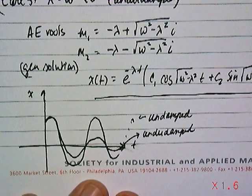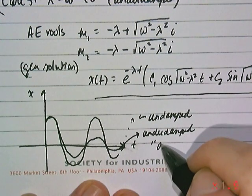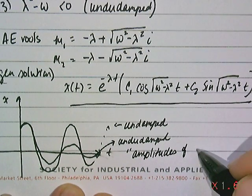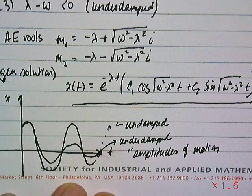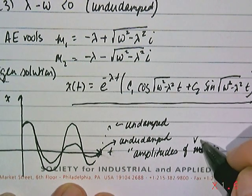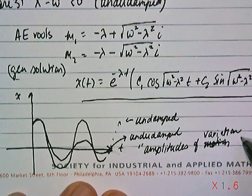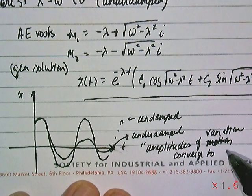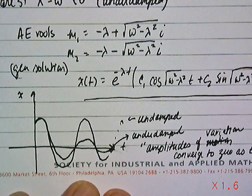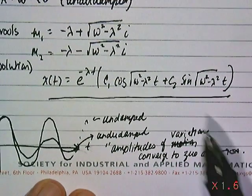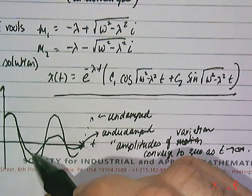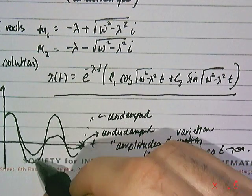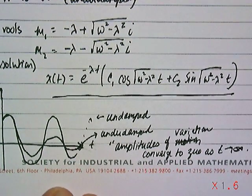One way of describing that would be this statement: amplitudes of variation converge to zero as time goes to infinity. What happens is the system would oscillate normally, and then you'd start noticing that it's not making the variations that it used to. The variations are starting to converge to zero, so it just slowly stops varying until it's going to stop. That's an underdamped system.